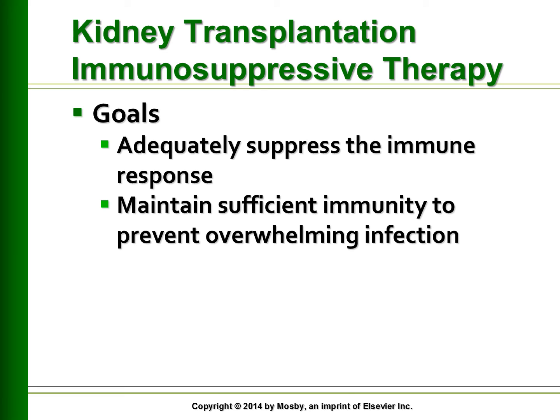The goals of immunosuppression therapy are to adequately suppress the immune response while maintaining sufficient immunity to prevent overwhelming infection. The success of kidney transplantation depends on changing the patient's immunological response so that the new kidney is not rejected as a foreign organ. Immunosuppression drugs protect the transplanted organ and are taken by the transplant recipient for the rest of their life. These drugs include corticosteroids, anti-lymphocyte preparations, monoclonal antibodies, and cyclosporine. Patients taking these drugs are at increased risk for death from viral, fungal, bacterial, or protozoal infection due to immunosuppression.